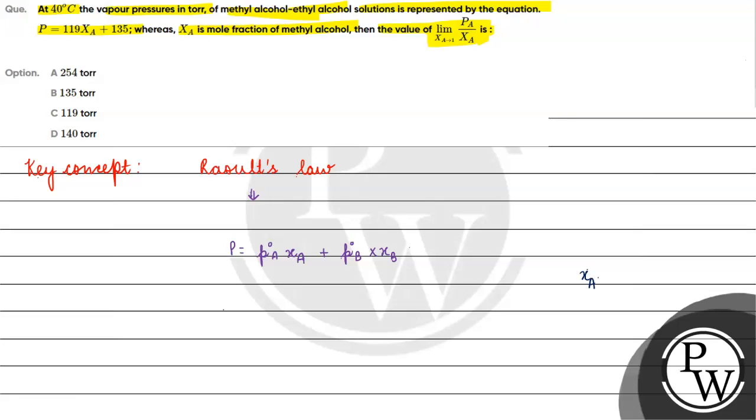Now, chi A plus chi B is equal to 1. Why is it equal to 1? Chi A is basically number of moles of A by number of moles of A plus number of moles of B, and chi B is number of moles of B by number of moles of A plus number of moles of B. This equals 1.